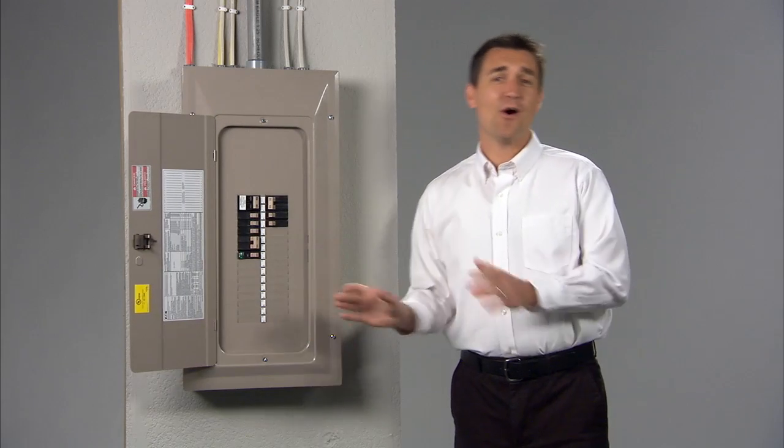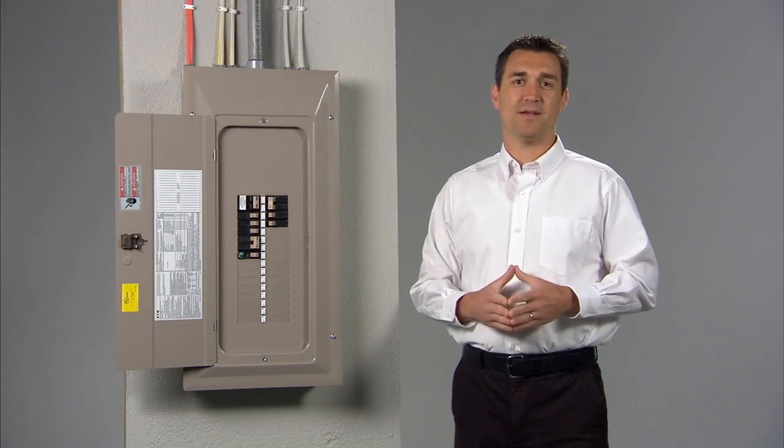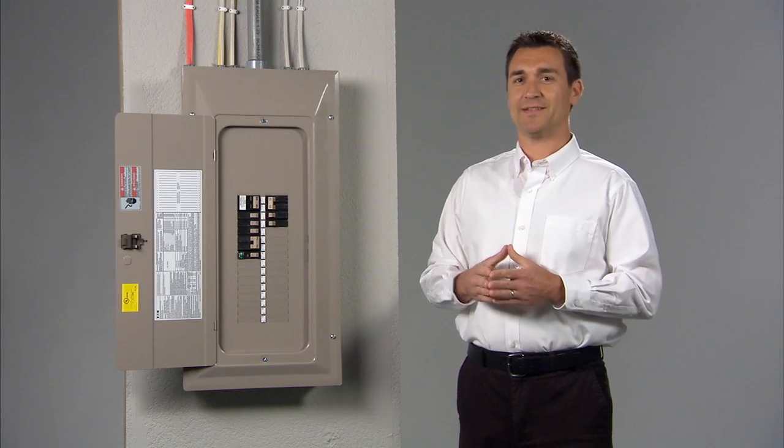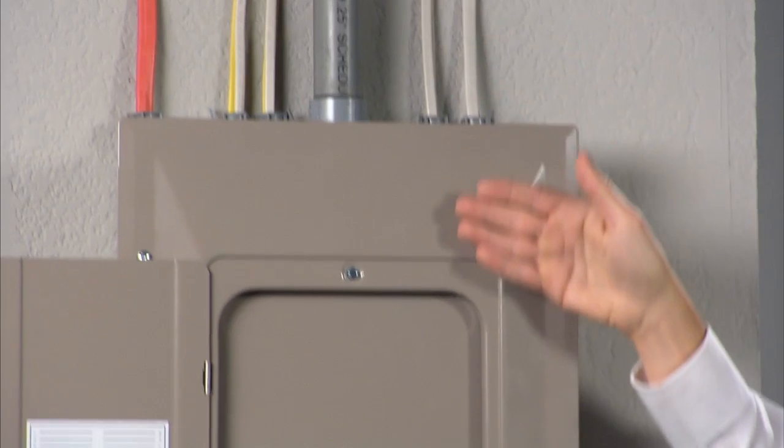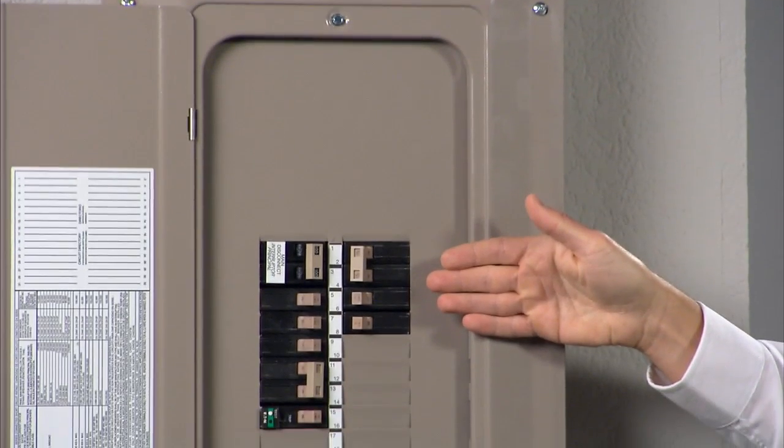Your electrical panel is the heart of your home's electrical system. Power comes in from the utility lines outside and then it's distributed throughout your home by passing through these circuit breakers.